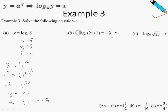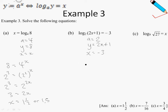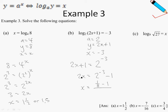In part b, we will once again convert from the logarithmic form to the index form. My a is 2, my y is 2x plus 1, and my x is negative 3. Writing it in index form: 2x plus 1 equals 2 to the power of negative 3. So 2x equals 2 to the power of negative 3 minus 1, which is 1/8 minus 1. Dividing by 2, x equals negative 7 over 16.